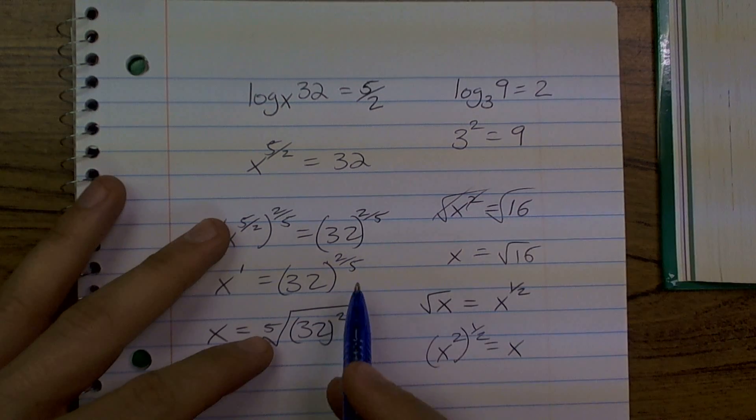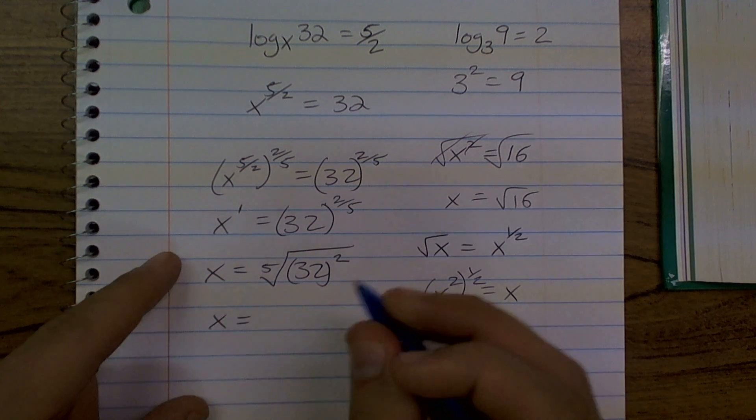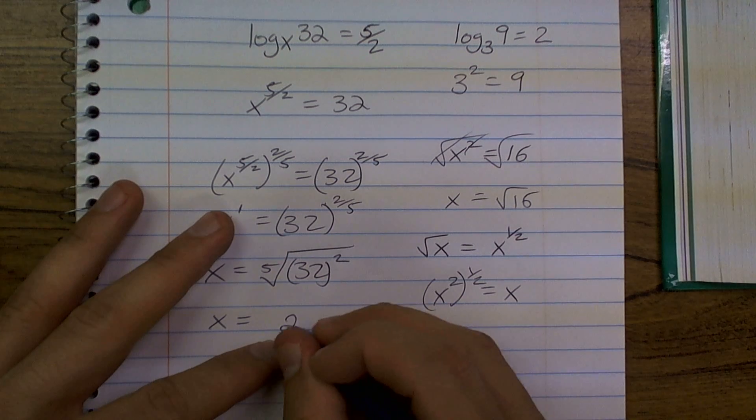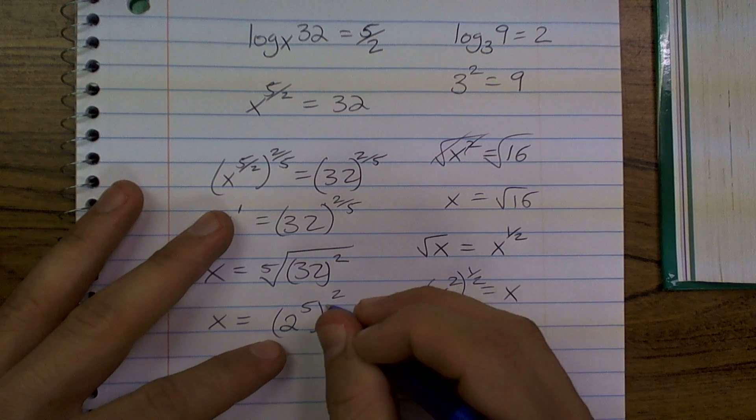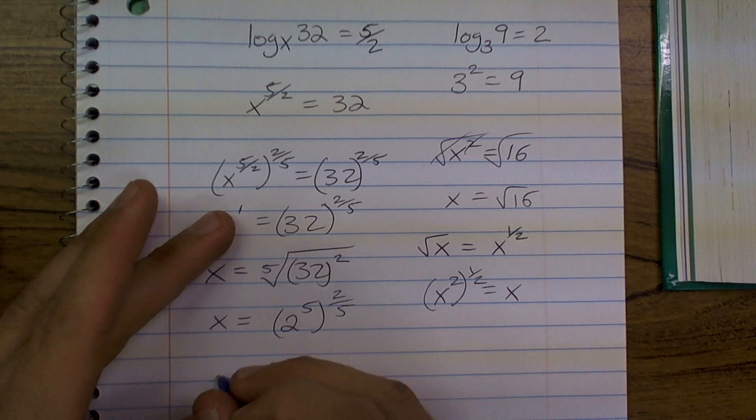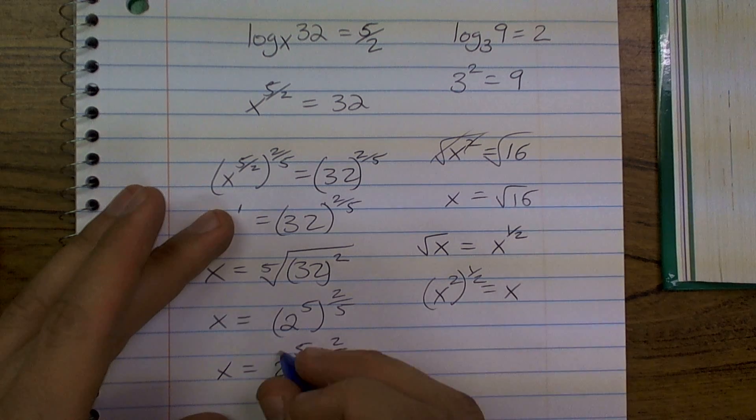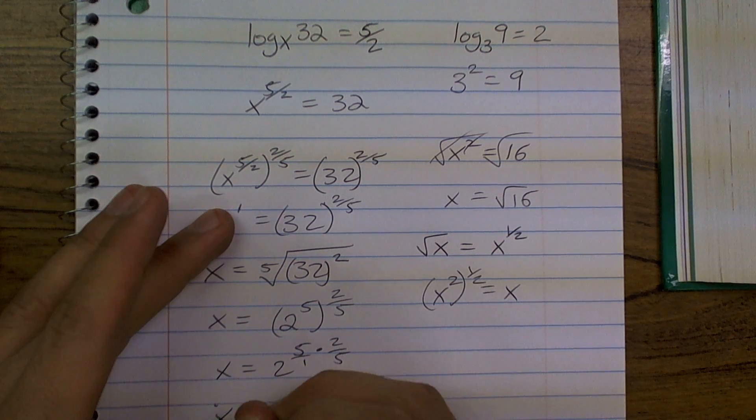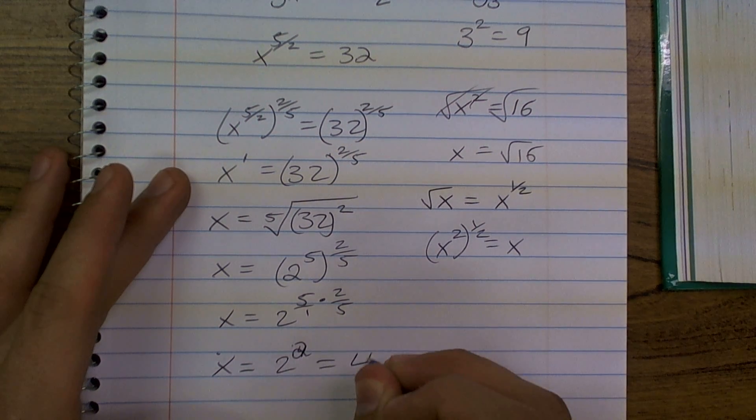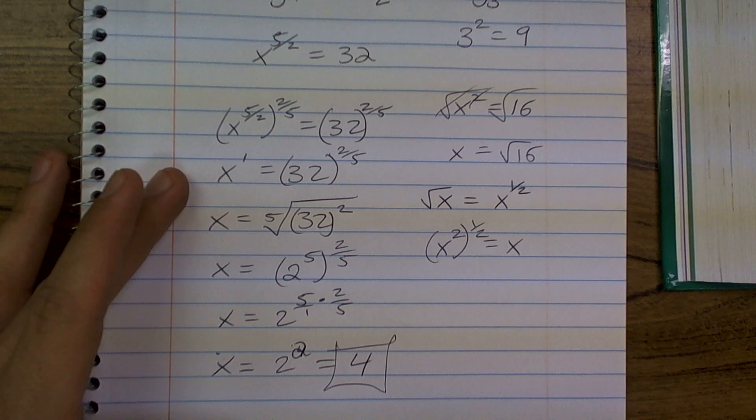Or, what's even more powerful, without a calculator, is you could take a look at this and say, how can I rewrite 32? Well, I can rewrite 32 as 2 to the 5th. And that's so powerful, because 2 to the 5th raised to another power, I can write that as 2 to the 5 times 2 over 5. Those are going to cancel out. So, I'm left with x equals 2 to the 2nd power, which equals 4. And, there you go, that's your answer.